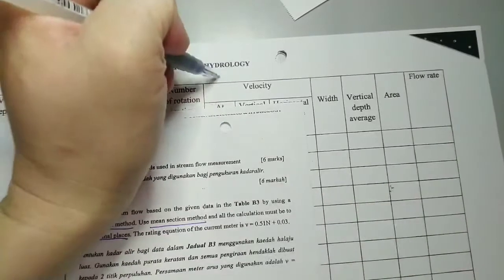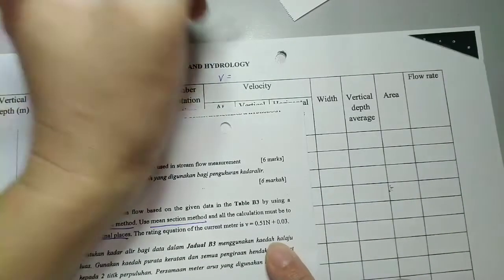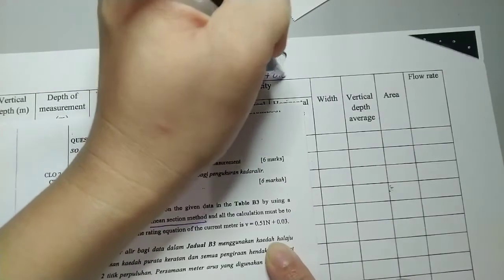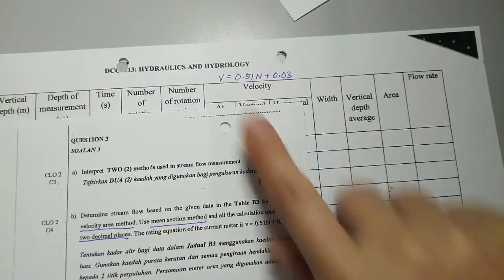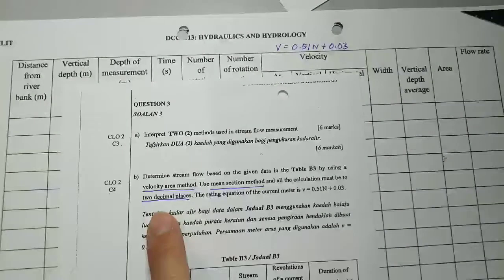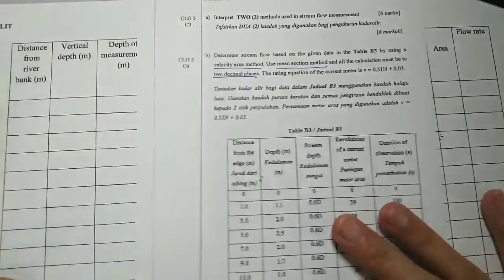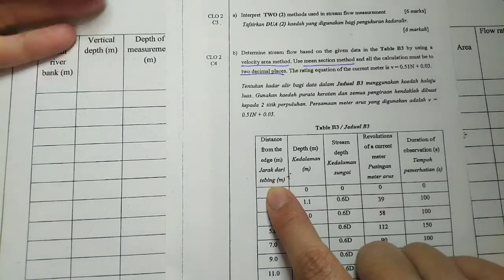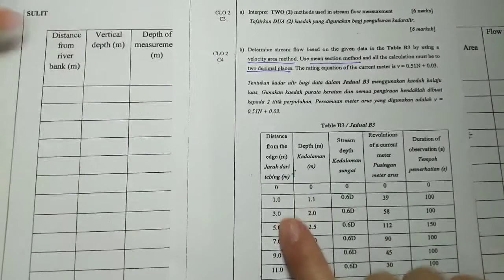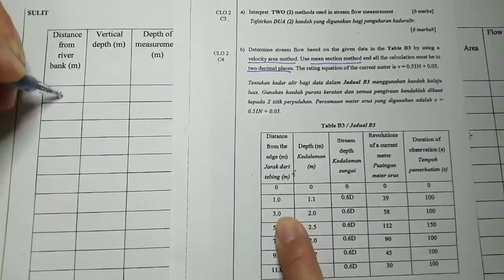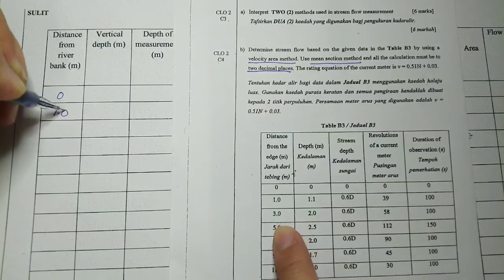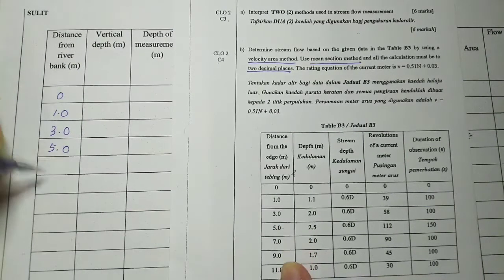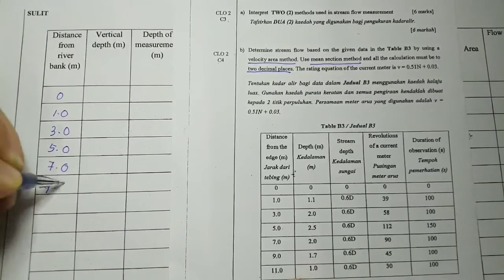The rating equation of the current meter is: v equals 0.51n plus 0.03. The station positions will be at 1, 3, 5, 7, 9, and 11.